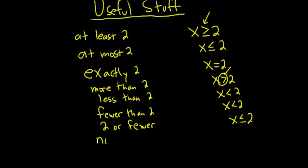No more than 2. Someone says no more than 2. You probably won't see this one, but why not? Just for completeness. So if you can't have more than 2, the most you can have is 2. So 2 or less, less than or equal to 2.